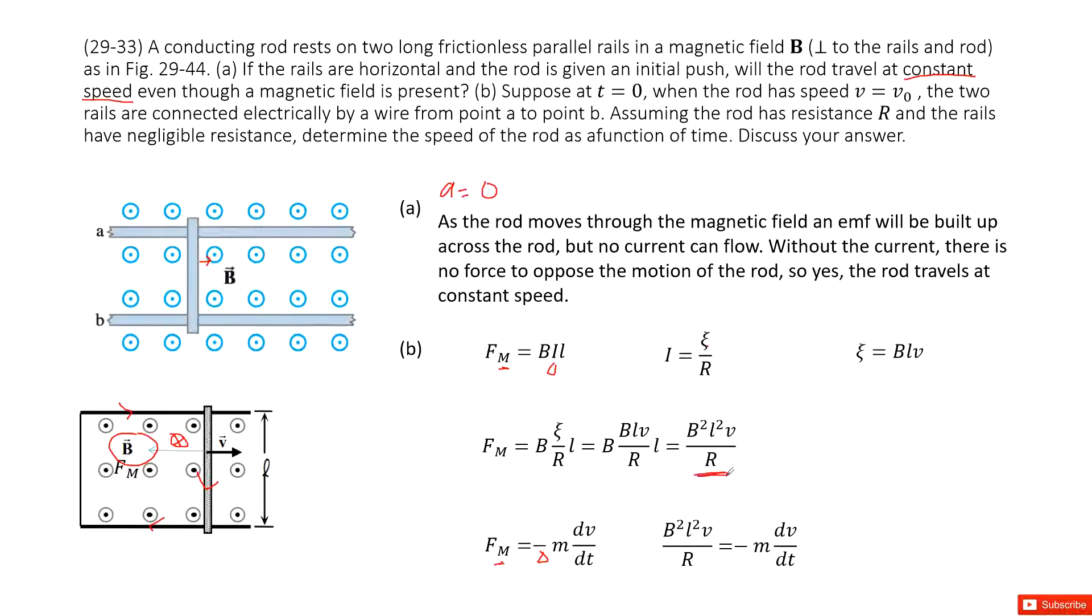So we input I and epsilon inside, and we get a function for this magnetic force. Then we input this term inside, and the function looks like this one.